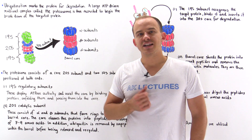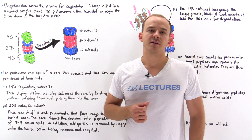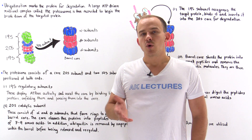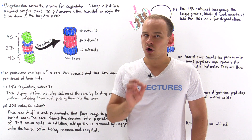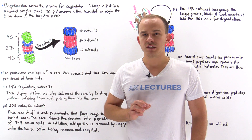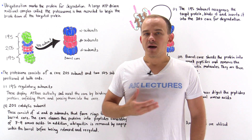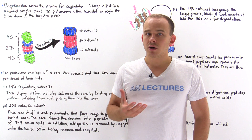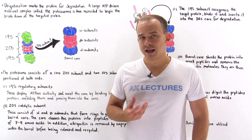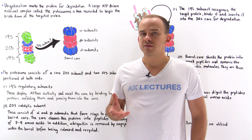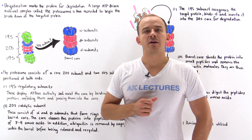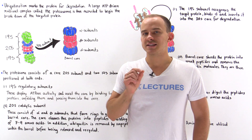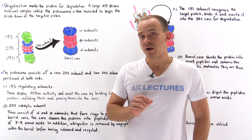Once we attach many ubiquitin molecules onto a given protein, we ultimately target that protein for breakdown within the cell. But what exactly is the structure inside the cell that allows us to break down these proteins? Well, it's a structure known as the proteasome.